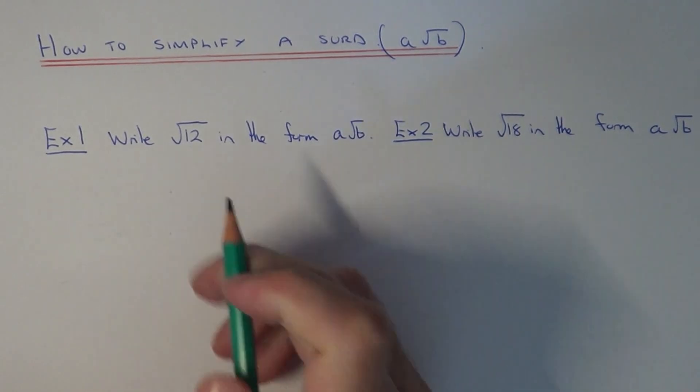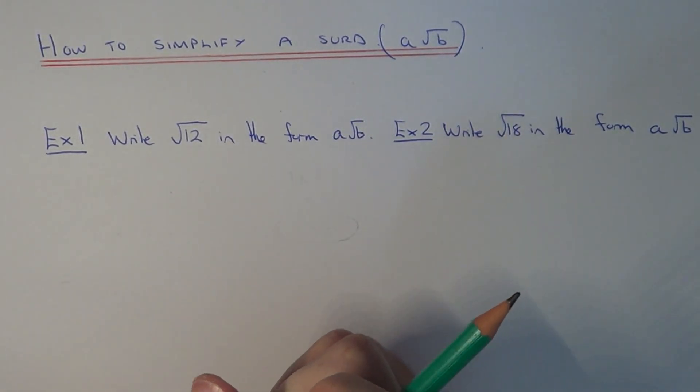So let's have a look at example one. This time we've got to write down root twelve in the form A root B. To do this, we need to think of two numbers which multiply to give twelve, and one of the numbers must be a square number.